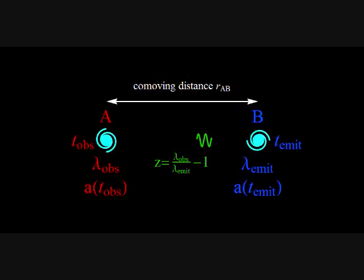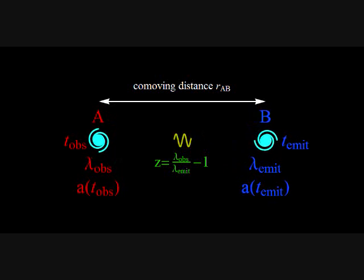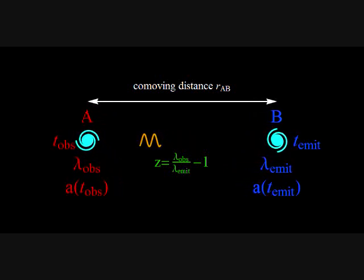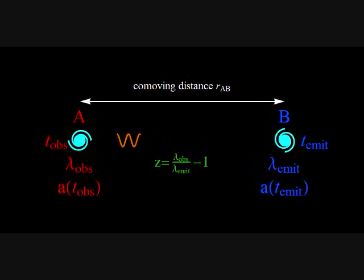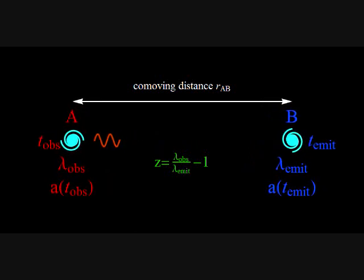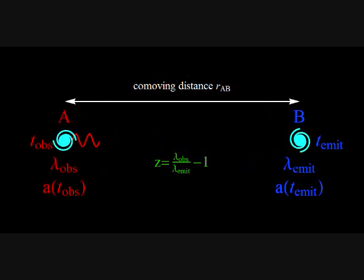The expansion of the universe causes the wavelength of the photon to increase, and thus its color to shift to the red end of the spectrum. At time T sub observed, the photon is observed in galaxy A with wavelength lambda sub observed.